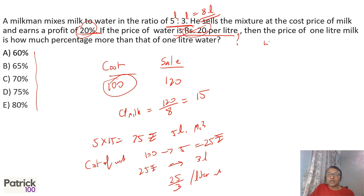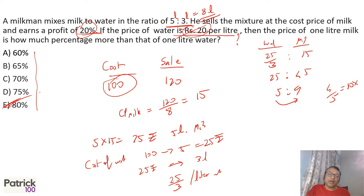So that means if I take a ratio of water and milk, water is 25 upon 3, milk is 15, or 25 is to 45, or 5 is to 9. How much more? 4 out of 5 more, which is 80%. That will be the answer. 4 out of 5 more, 80%. That's how you can go about it. Thank you.